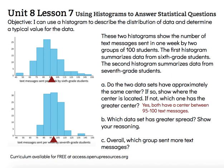Letter B: Which data set has a greater spread? Show your reasoning. Spread is talking about the distribution of the data — how far apart or how close together is it? When thinking about how far apart it is, we want to measure that with a length, looking at the minimum and the maximum values and the distance between those. I'm going to draw those distances for both 6th and 7th grades. You can see there's more variability in the number of text messages sent by the 6th graders compared to the 7th graders. The 7th graders are more alike overall, so the 6th graders have the greater spread.